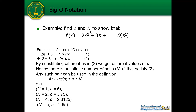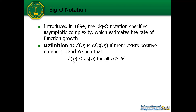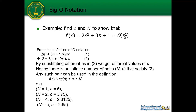Example: we have to find c and N to show that f(n) = 2n² + 3n + 1 is Big O of n². From the definition, f(n) is our function and g(n) is n². We write down the Big O definition: the function will be smaller than or equal to c·n² for certain values of n.